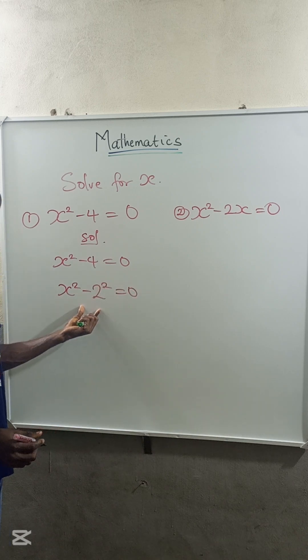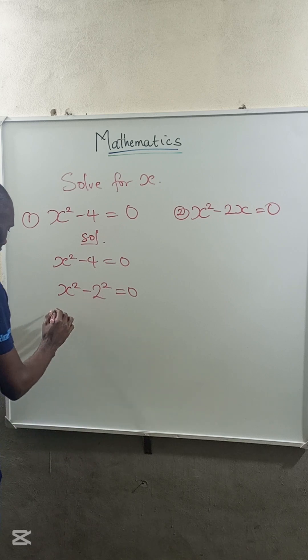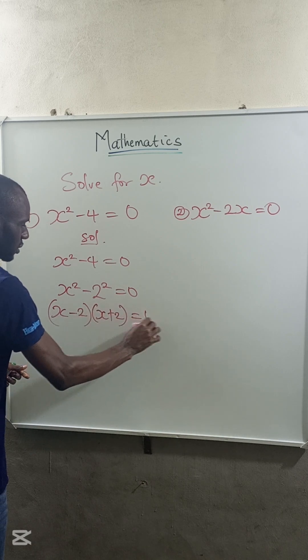So now we have a difference of 2 squared. So this can be expressed as x minus 2 multiplied by x plus 2 is equal to 0.